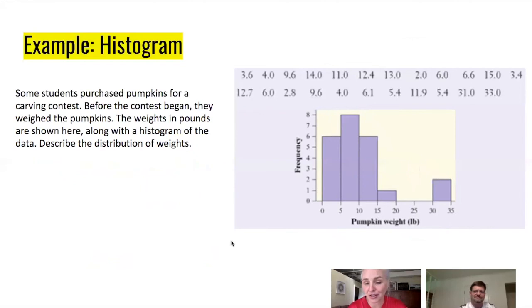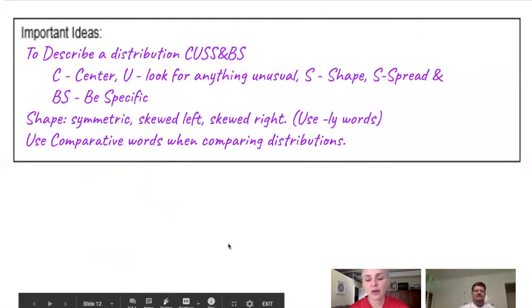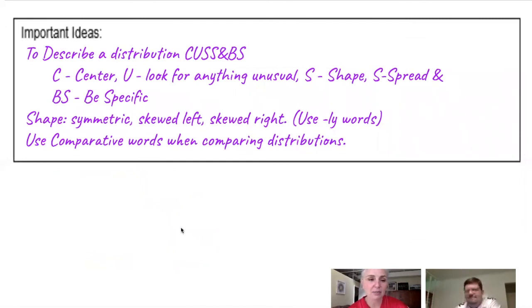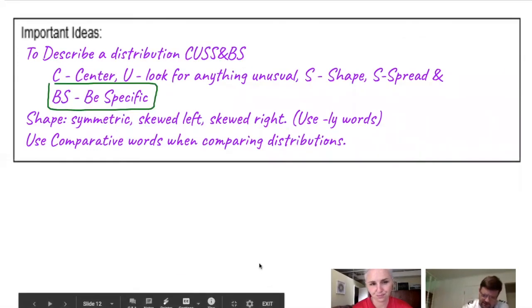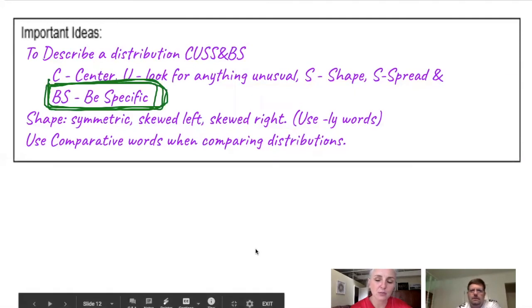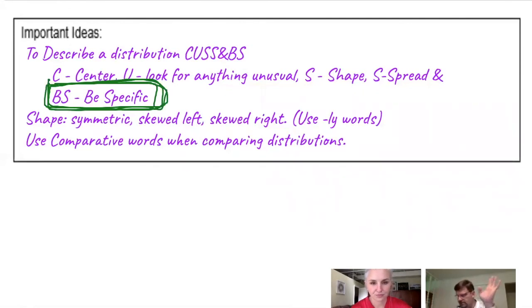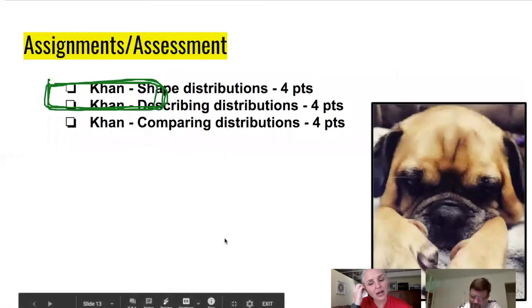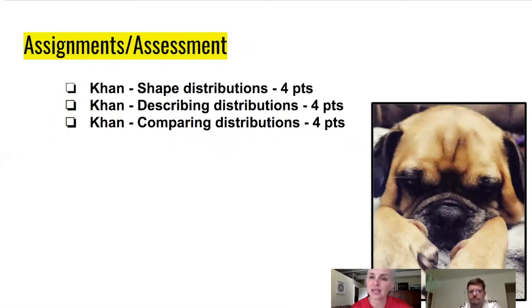The most important thing we talked about today is CUSS and BS — making sure you're addressing all four pieces: Center, Unusual, Shape, and Spread — and referencing the prompt in your response. If you're comparing two distributions, use comparative words. Be specific: if you don't reference the context of the problem — whether it's about pumpkins, marriages, or anything else — you're pretty much done. We hope this video was helpful and we'll see you on the next one.